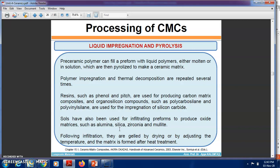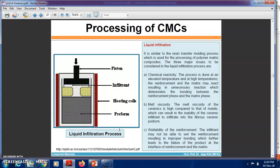Ceramic polymer can fill a preform with a liquid polymer, either molten or in solution form, which is then pyrolyzed to make the ceramic matrix. Polymer impregnation and thermal decomposition are repeated several times. Resins such as phenol and pitch are used for producing carbon matrix composites, or organosilicon compounds such as polycarbosilane and polymethylsilane are used for impregnation of silicon carbide. Salts have also been used for infiltrating preforms to produce oxide matrices such as alumina, silica, zirconia, and mullite. Following infiltration, they are gelled by drying or by adjusting temperature, and the matrix is formed after heat treatment.